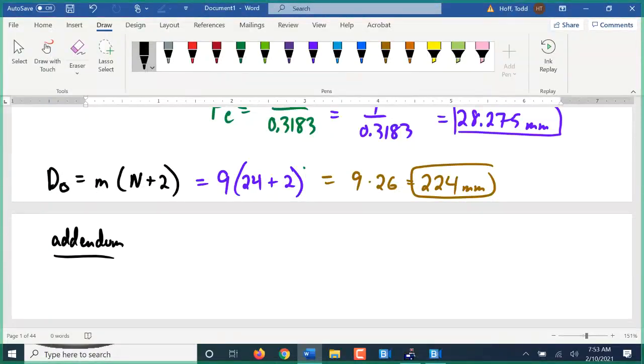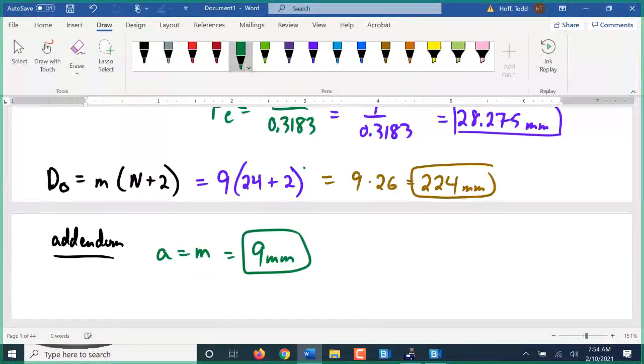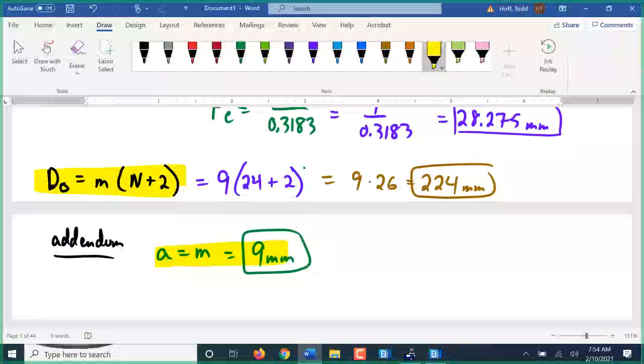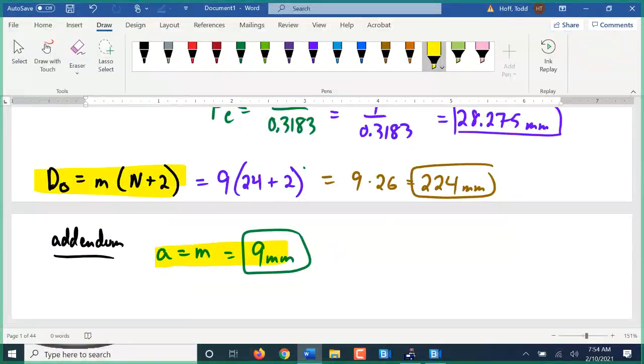So we're going to find the addendum. If we look back at our formulas here, the formula for addendum is just addendum equals the module. So the addendum here is 9 millimeters. That one I always thought was weird, but that's just a quirk. When they do that design, the outside diameter is just the tooth spacing plus 2 compared to the pitch diameter.